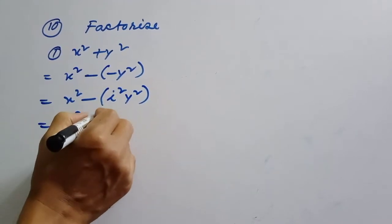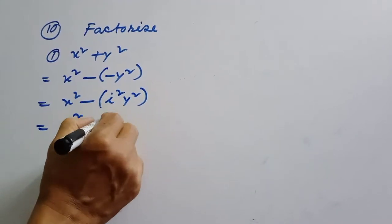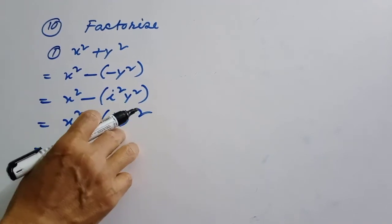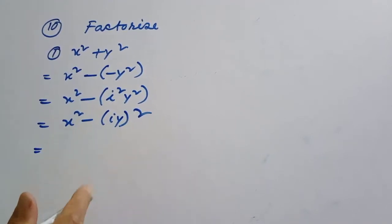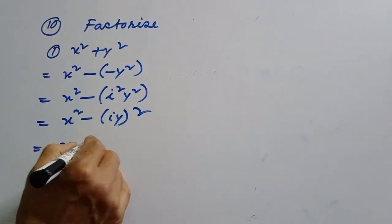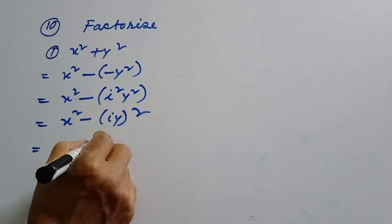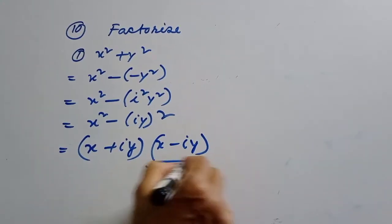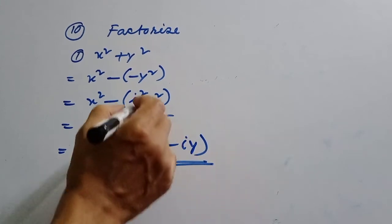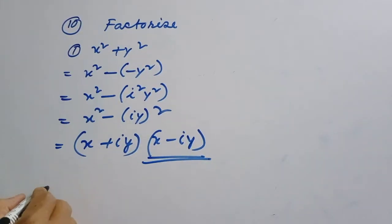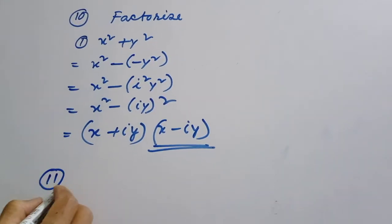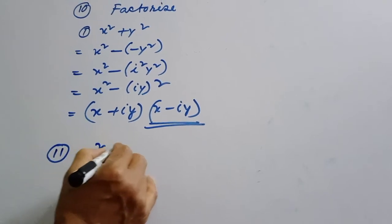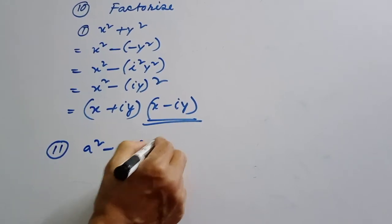Question number 8: if x is equal to 0, then a squared minus 1 minus 2ai.